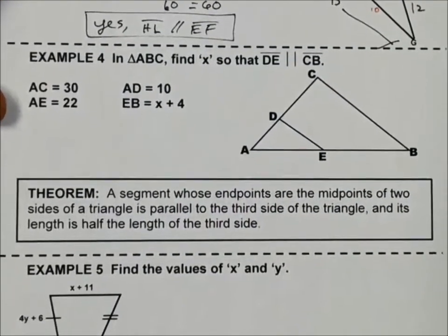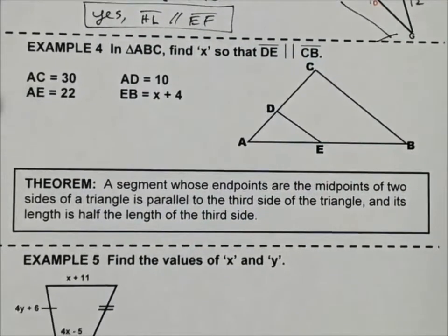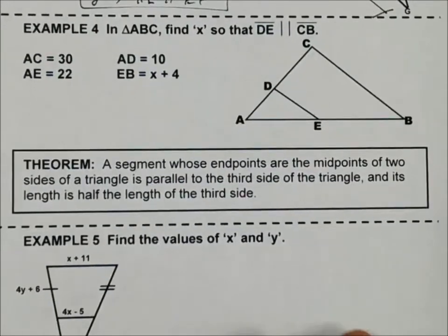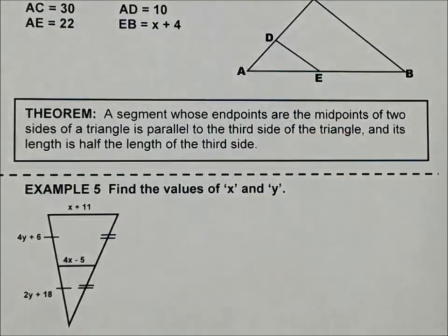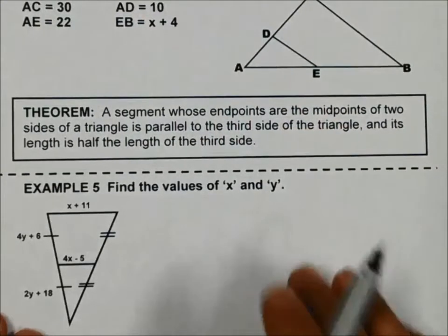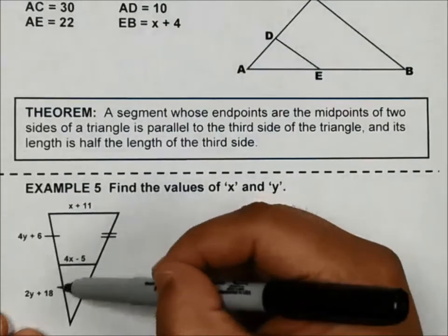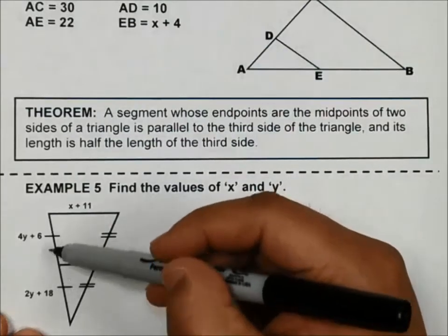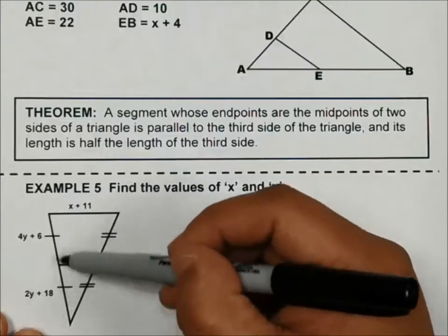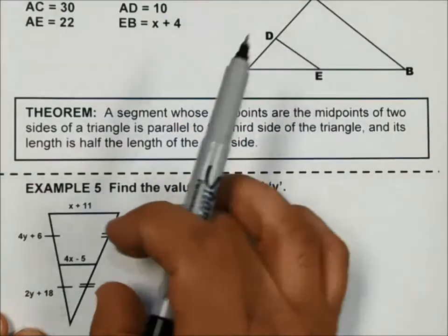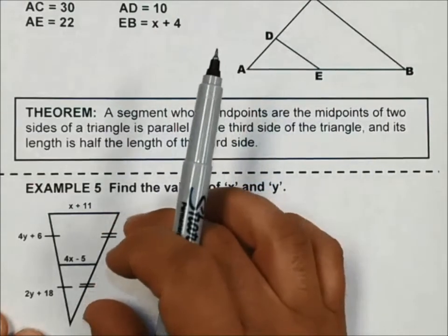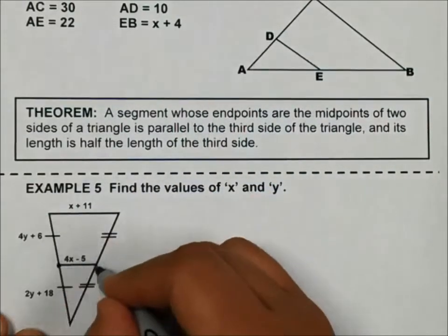This next theorem: a segment whose endpoints are the midpoints of two sides of a triangle is parallel to the third side of the triangle, and its length is half the length of the third side. So I'm going to use example 5 here to explain what this theorem means. Looking at this triangle down here, you notice that these two are congruent, the 4Y plus 6 and the 2Y plus 18. Because of these tick marks, I know they're congruent. And if I look at the other side of the triangle, these tick marks also match, so that tells me this is a midpoint and this is a midpoint.